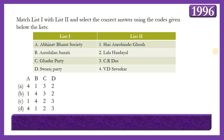Next matching question: Match societies with personalities. List 1: Abhinav Bharat Society, Anushilan Samiti, Ghadar Party, Swaraj Party. List 2: Sri Aurobindo Ghosh, Lala Hardayal, C.R. Das (Chittaranjan Das), Veer Savarkar. The answer is option C — 1, 4, 3, 2 — meaning Abhinav Bharat Society was founded by Vinayak Damodar Savarkar (Veer Savarkar) and his brother Ganesh Damodar Savarkar in 1904; Anushilan Samiti was led by Aurobindo Ghosh and Varindra Ghosh; Ghadar Party was founded in San Francisco by Lala Hardayal and Sohan Singh Bhakna; and the Swaraj Party was founded as the Congress-Khilafat Swaraj Party by Chittaranjan Das and Motilal Nehru.